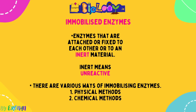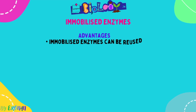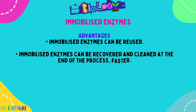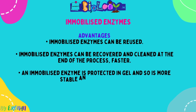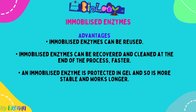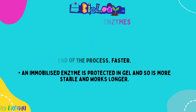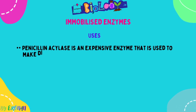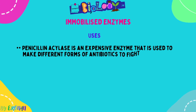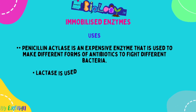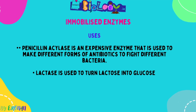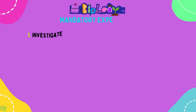Immobilized enzymes — your next experiment — are enzymes that are attached or fixed to each other or to an inert material. Inert means unreactive. You can immobilize enzymes physically or chemically, and in your experiment you immobilize them using sodium alginate. Advantages — do not say they are cheaper, that is not acceptable. They can be reused, recovered and cleaned at the end of a process faster. Immobilized enzymes are more stable and work for longer. Uses include penicillin acylase, an expensive enzyme used to make different forms of antibiotics, and lactase, which is used to turn lactose into glucose.